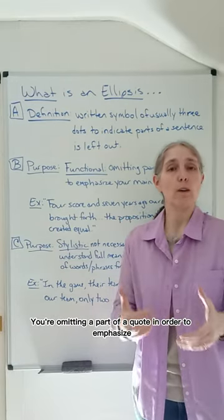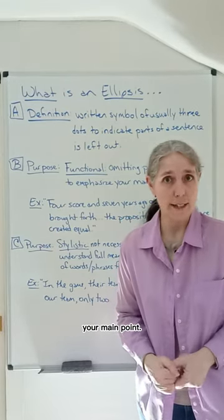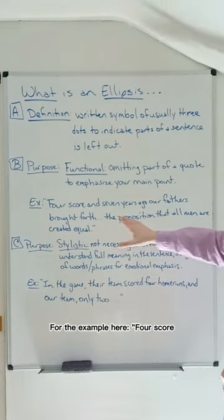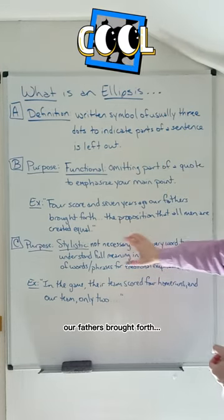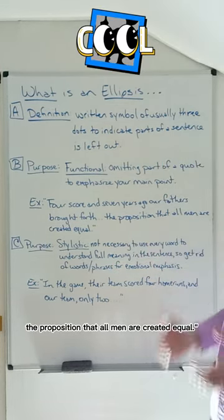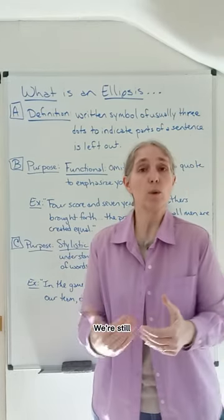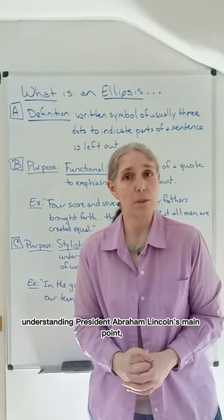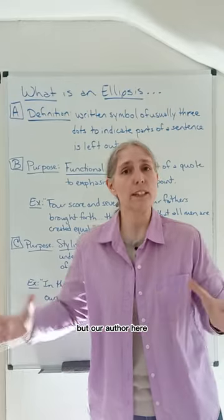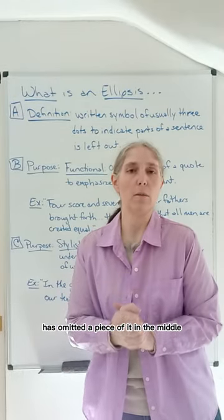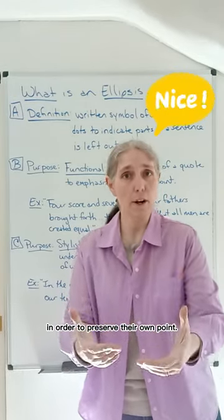You are omitting a part of a quote in order to emphasize your main point. For the example here, four score and seven years ago, our fathers brought forth the proposition that all men are created equal. We're still understanding President Abraham Lincoln's main point, but our author here has omitted a piece of it in the middle in order to preserve their point.